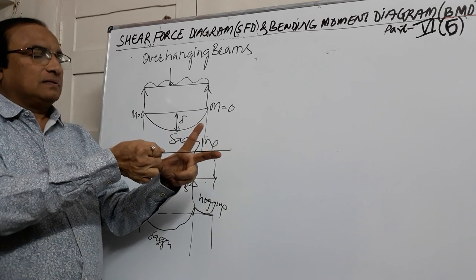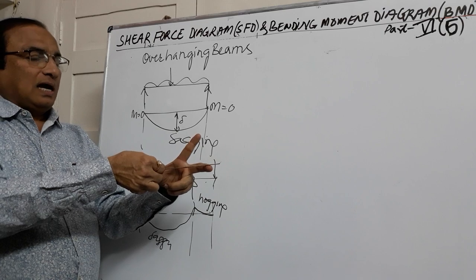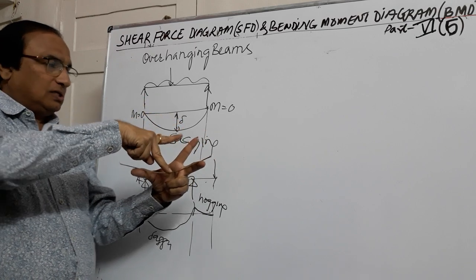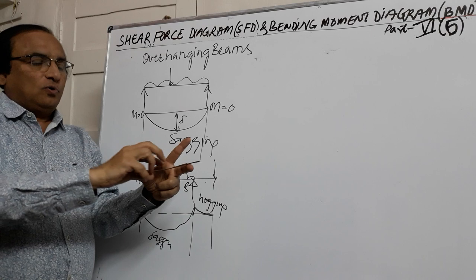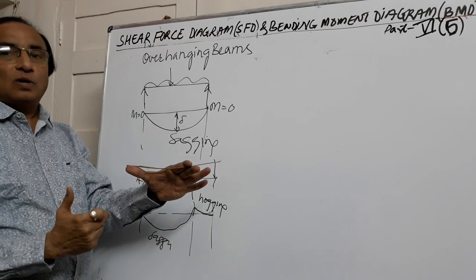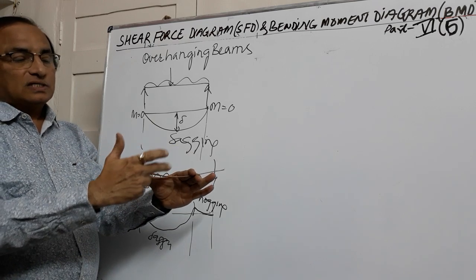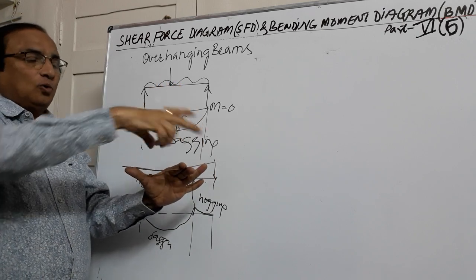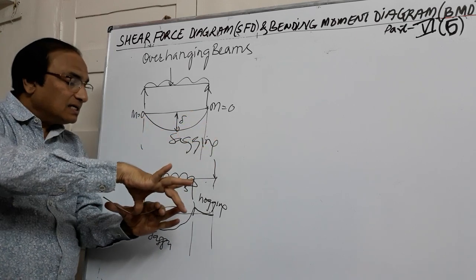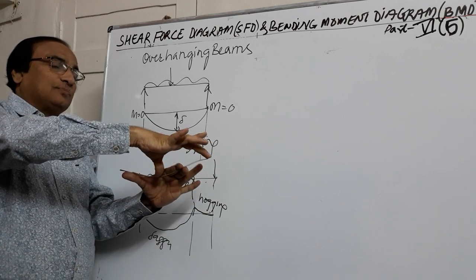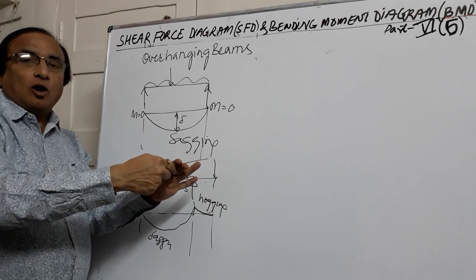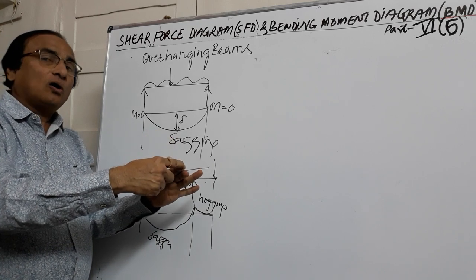Let me show this with a model. Suppose if I support the beam on two supports — it is simply supported and carrying load. If I apply load to this beam, it bends in the downward direction, which is sagging moment. Now if I hold the beam as an overhanging beam, this part is simply supported and this is the overhanging part. If I apply a load here and also a load here, you can see the pattern of bending — at this point it is sagging and at the support it is hogging. Bending down is sagging or positive; bending up is hogging or negative bending moment.